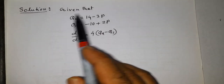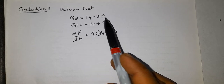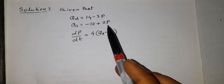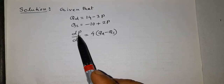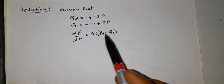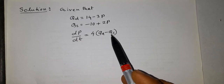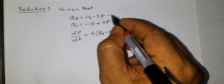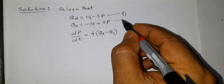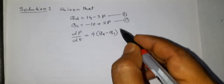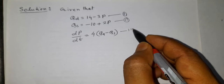Solution: the demand function is equation 1, the supply function is equation 2, and dp/dt = 4(Qd − Qs) is equation 3.